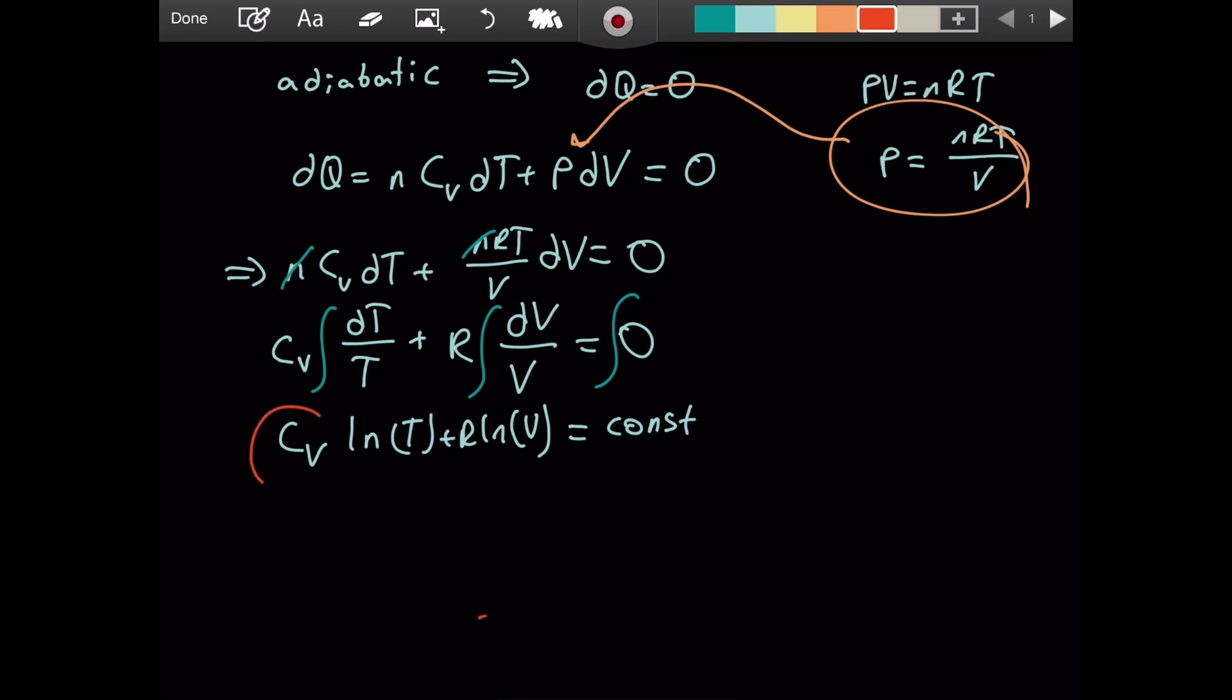It is a property of logarithms that you can take this multiplier and put it as the exponent inside. So we have ln of T to the power of Cv plus ln of V to the power of R giving you a constant. If you have two logarithms with the same base and you're adding them, you can combine them as one logarithm and multiply the arguments. You can do this: ln of T to the Cv times V to the R equals a constant. It is still the same constant.